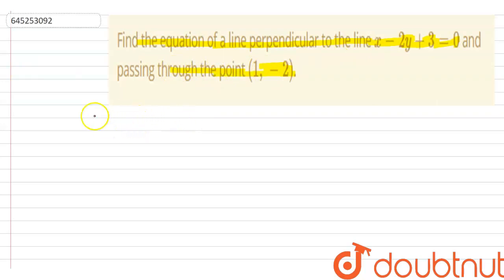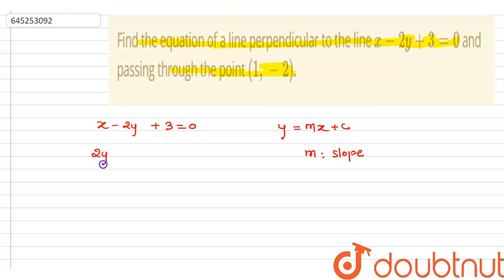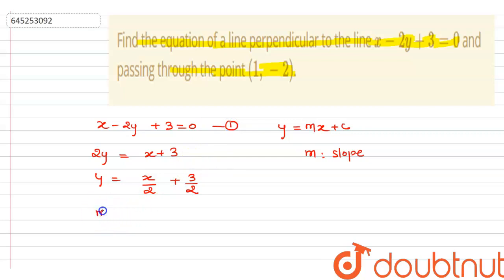So we have the line x minus 2y plus 3 equals 0. We can get the slope by comparing with y equals mx plus c. We rewrite this as 2y equals x plus 3, so y equals x by 2 plus 3 by 2. Therefore m1 equals 1 by 2.